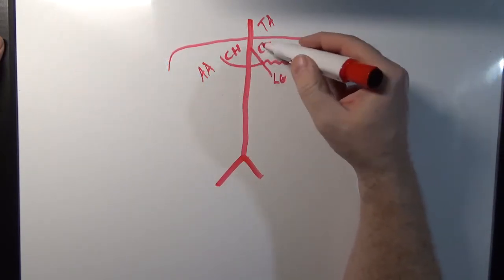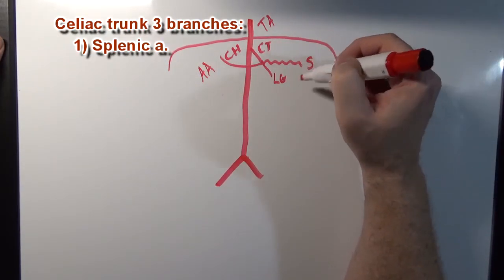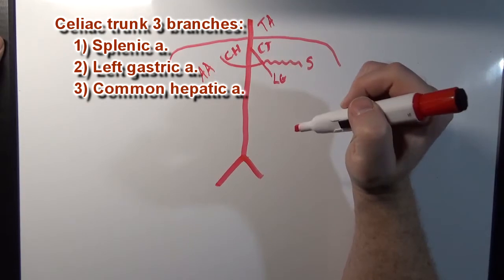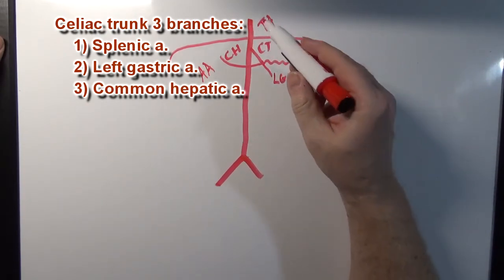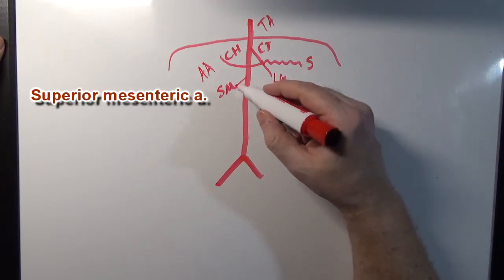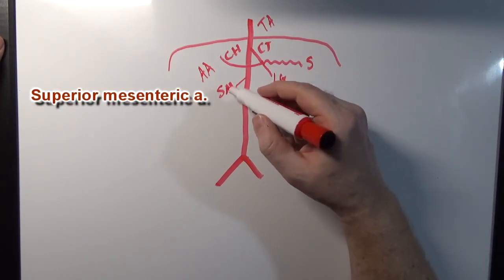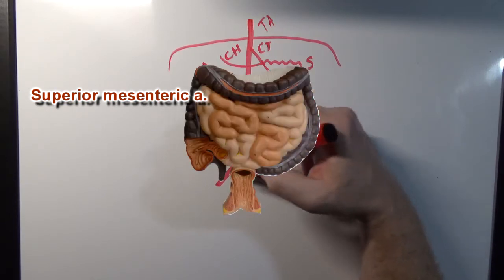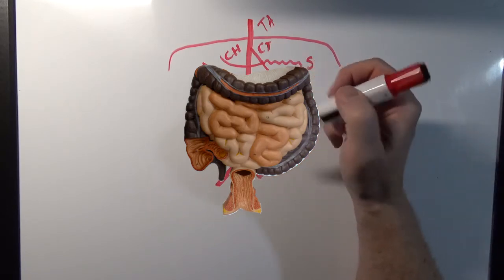So those are the three branches off the celiac trunk: splenic, left gastric, and common hepatic. The next branch is going to be the superior mesenteric artery. The superior mesenteric artery is going to supply blood to the small intestines and the first part of the large intestine, the ascending and transverse colon.